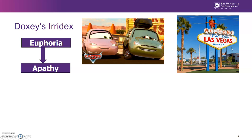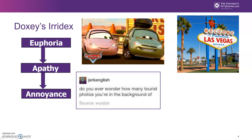That's kind of the best way to have a destination — where tourists and residents do their own thing. But if a tourist destination develops too much too quickly, people can start to get really annoyed with the tourists. I found this tweet from somebody saying 'do you ever wonder how many tourist photos you're in the background of?' — because there are so many tourists around. This annoyance typically happens in destinations that aren't specifically for tourism but where tourists start coming en masse.